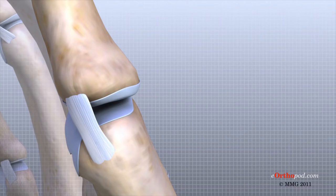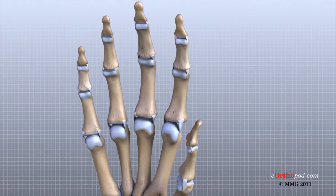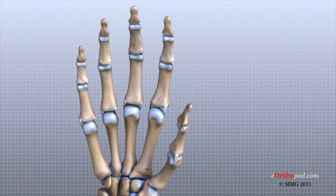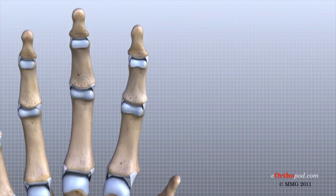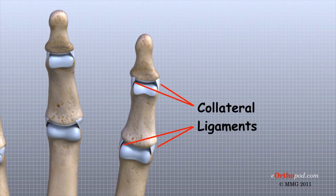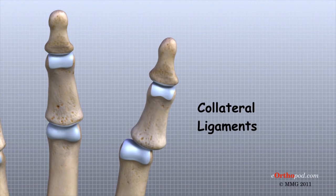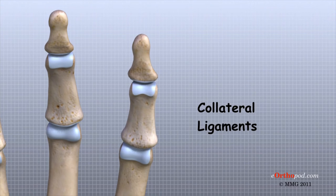Ligaments are tough bands of tissue that connect bones together. Two important structures called collateral ligaments are found on either side of each finger and thumb joint. The function of the collateral ligaments is to prevent abnormal sideways bending of each joint.